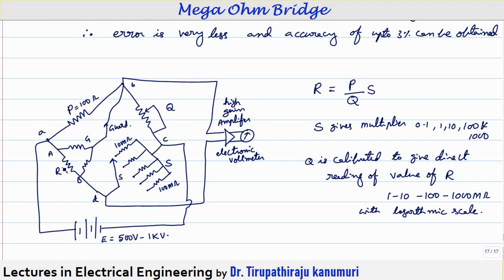Q is varied for fine tuning to achieve balance. Depending on the approximate range of the unknown resistance, the appropriate S branch is selected, and Q is calibrated accordingly. The reading on Q is provided on a logarithmic scale from 1 to 10,000 mega ohms. The dial of Q directly indicates the value of R, which equals (P/Q) multiplied by the multiplication factor S selected from the decade box (0.1, 1, 10, 1000, or 10,000).